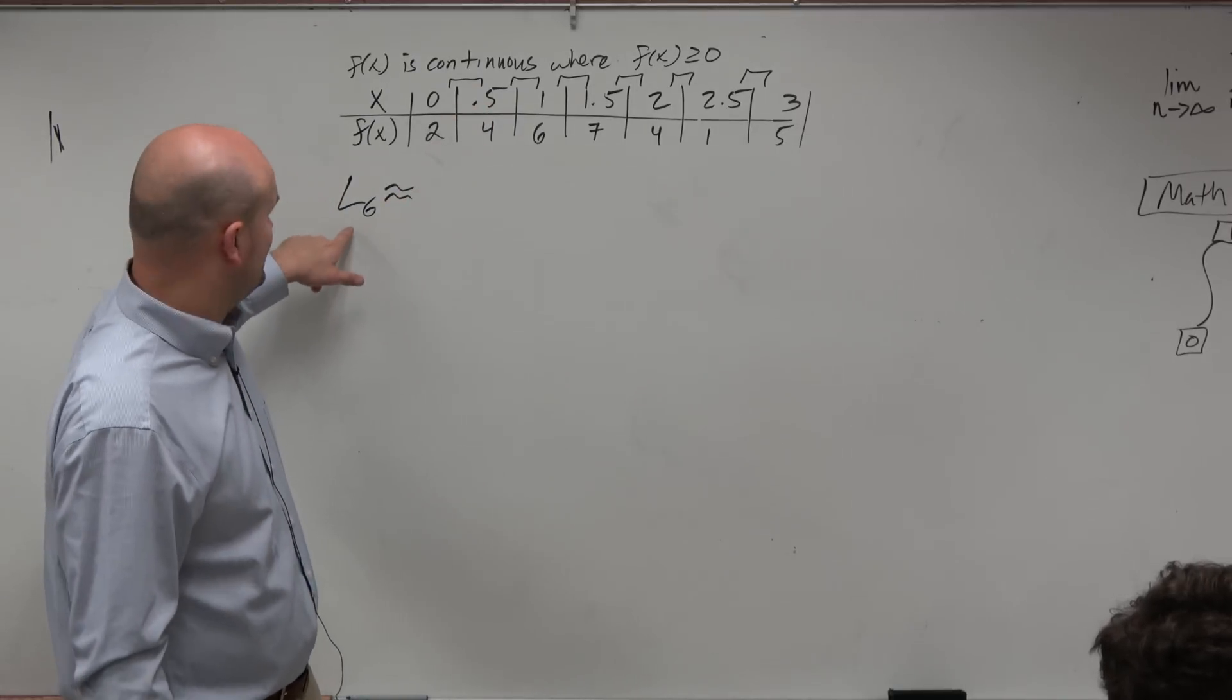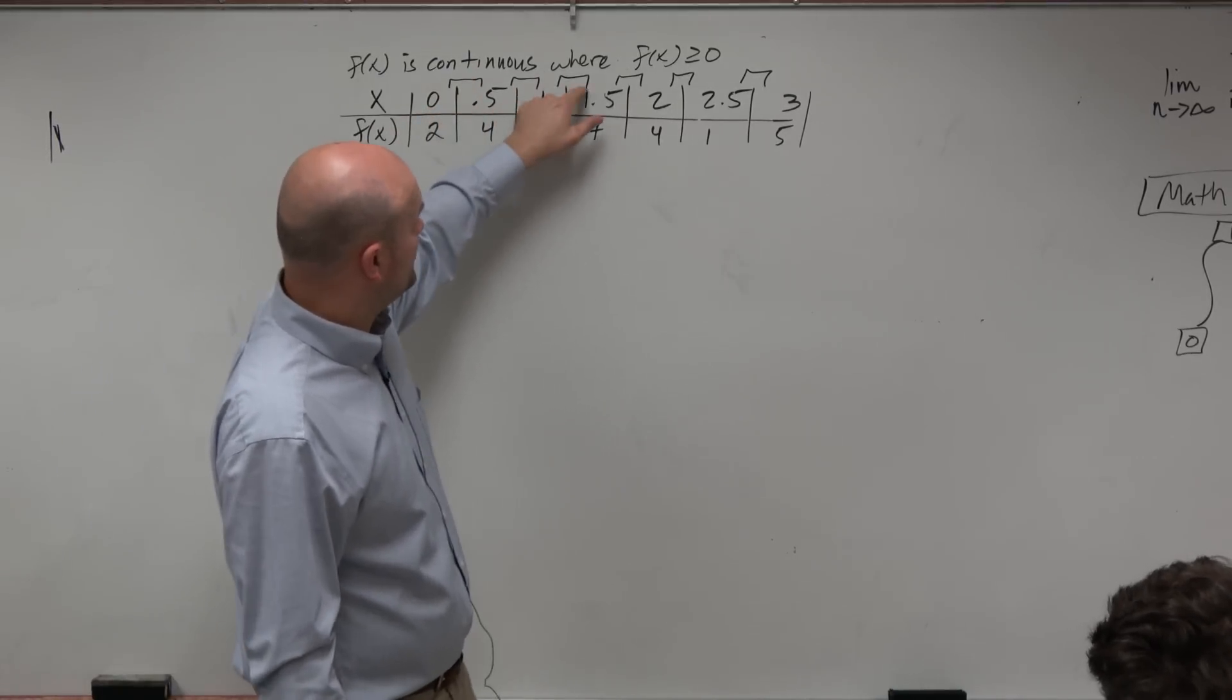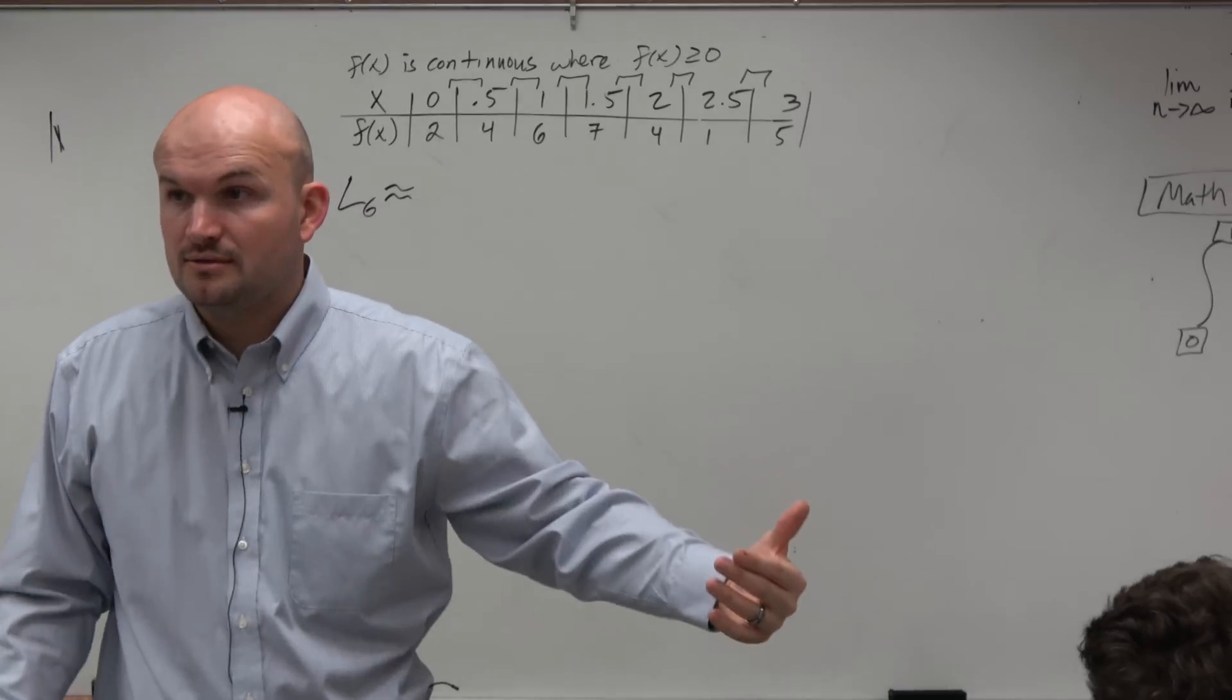And again, we're saying calculate the left hand approximation with six intervals. So do we have six intervals? 1, 2, 3, 4, 5, 6. OK, perfect. Right?